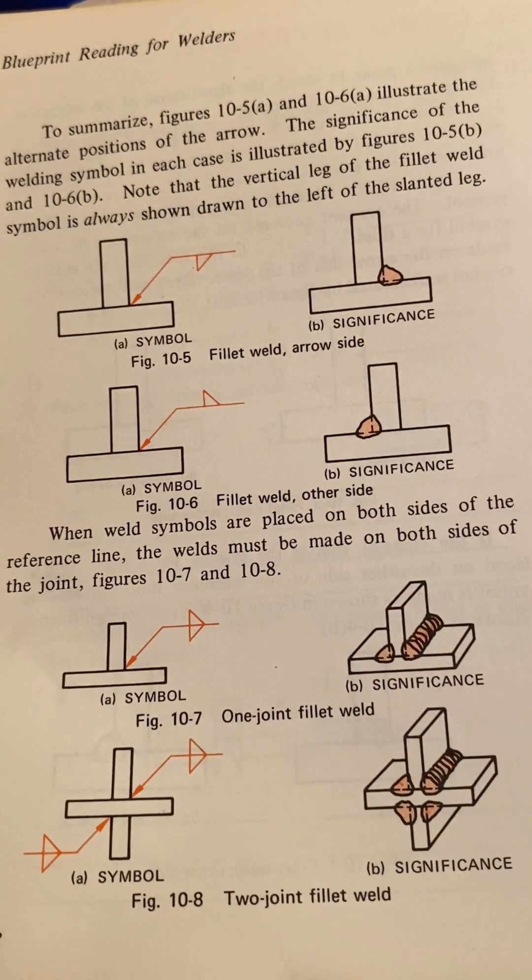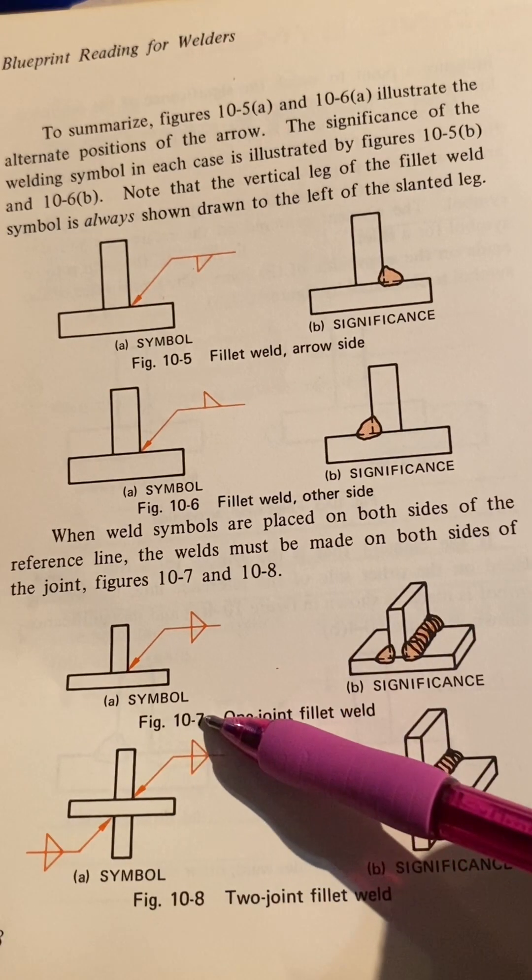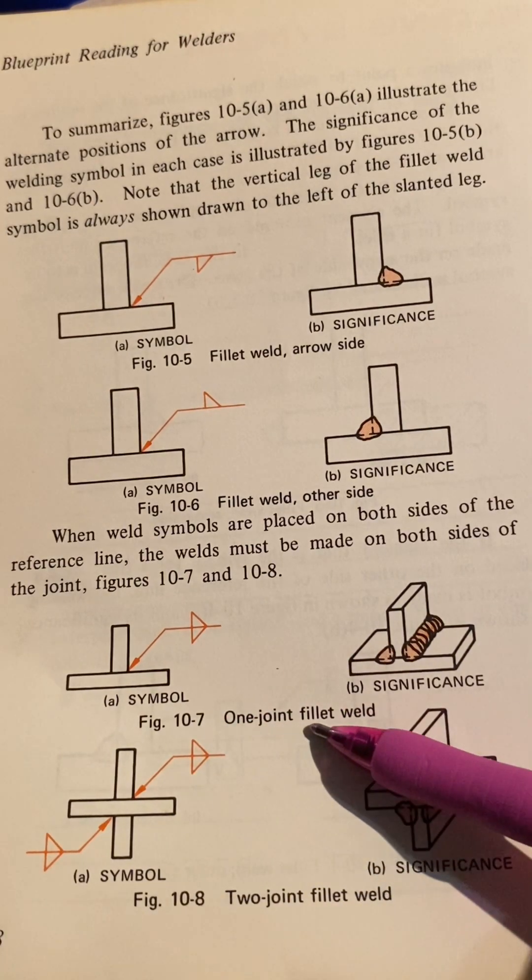When weld symbols are placed on both sides of the reference line, the welds must be made on both sides of the joint. Figures 10-7 and 10-8. That's figure 10-7, one joint fillet weld.